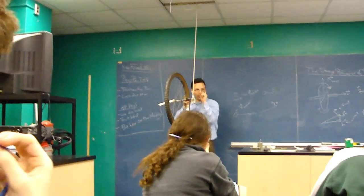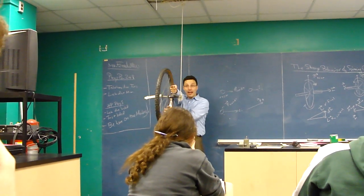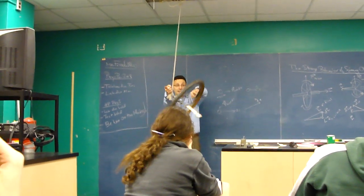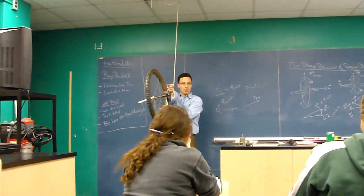So that torque, over a little bit of time, will create angular momentum totally pointing that way, meaning the wheel is rotating like this. And the wheel will just fall down.